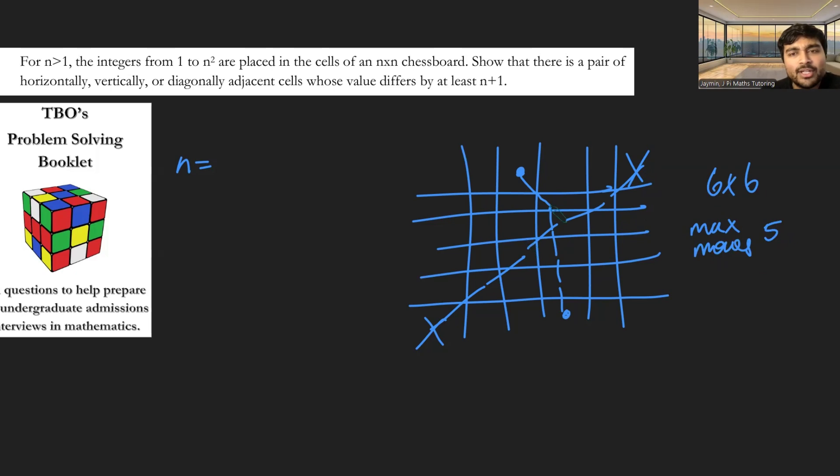And that's kind of the rule in general. So if you've got an n by n grid, the maximum number of moves you'll take to get from one square to another square is n minus 1. Okay, interesting.